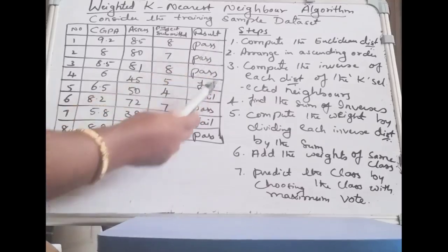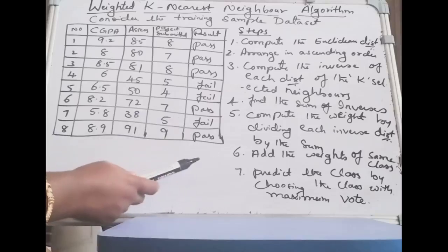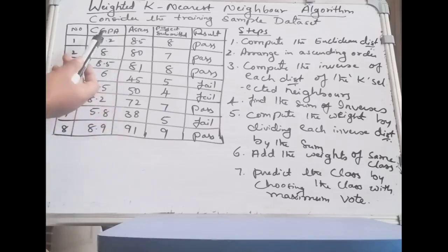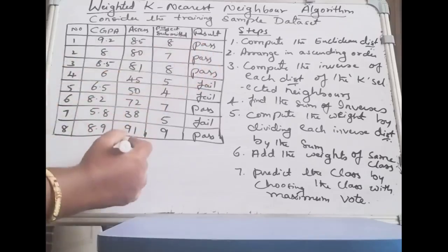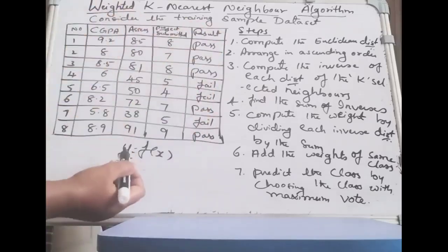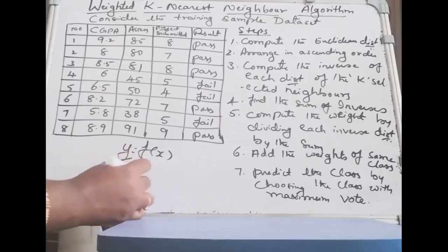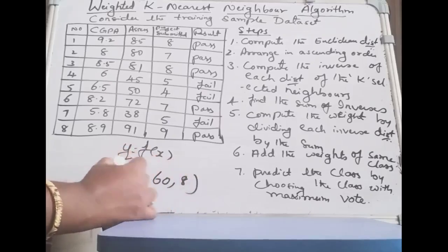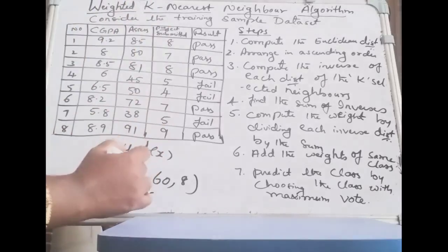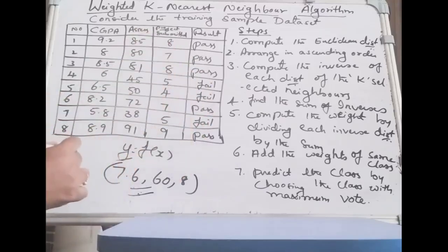We have to follow certain procedures to identify the weights of the instances and apply them to the test instance. The sample dataset has three independent attributes: CGPA, assessment, and project submitted, and a dependent attribute y = f(x), which is our target variable. Given a test instance of 7.6, 60, 8, we need to calculate the weighted KNN — whether this test instance falls under pass or fail when k = 3.